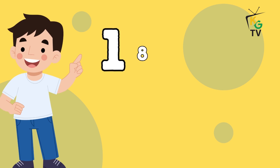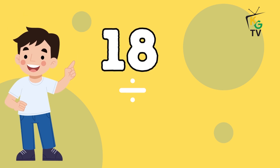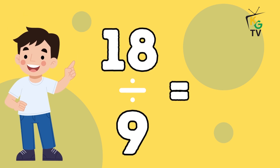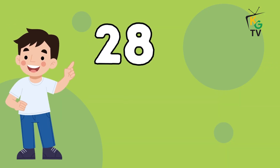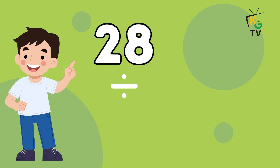18 divided by 9 is equal to 2. 28 divided by 4 is equal to 7.